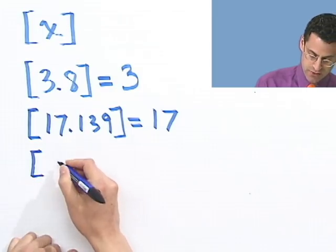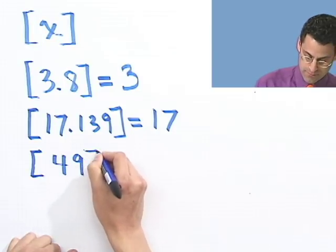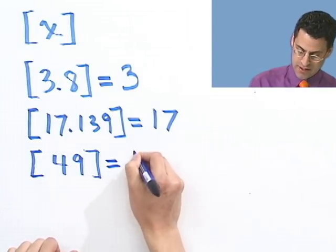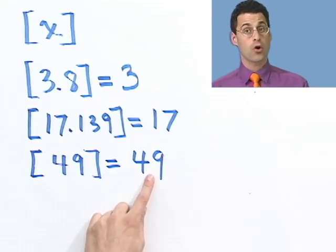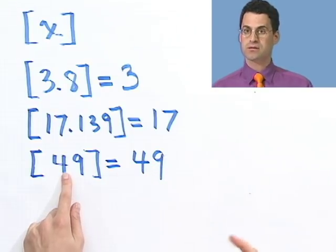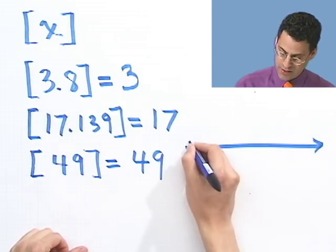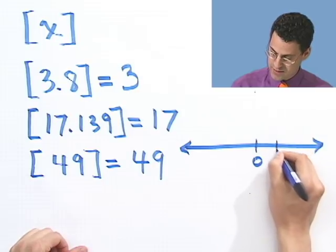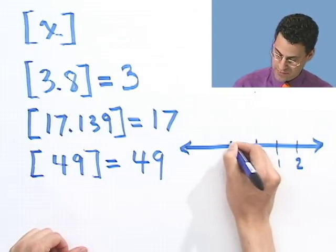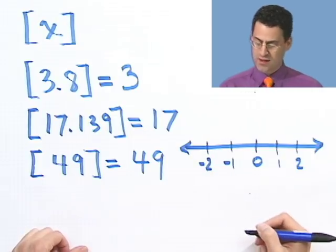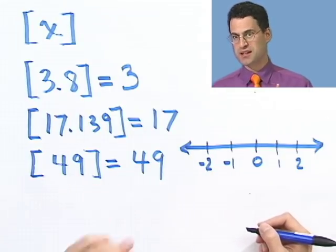What about the greatest integer function of 49? Well, it actually equals itself, because that is the biggest integer less than or equal to this number. So in fact, the greatest integer function of any integer is always the integer itself. Now, what about negative numbers? Negative numbers are a little bit harder, because when you think about negative numbers, things sort of work in reverse. On a number line with 0, 1, 2 to the right, minus 1 and minus 2 are to the left.